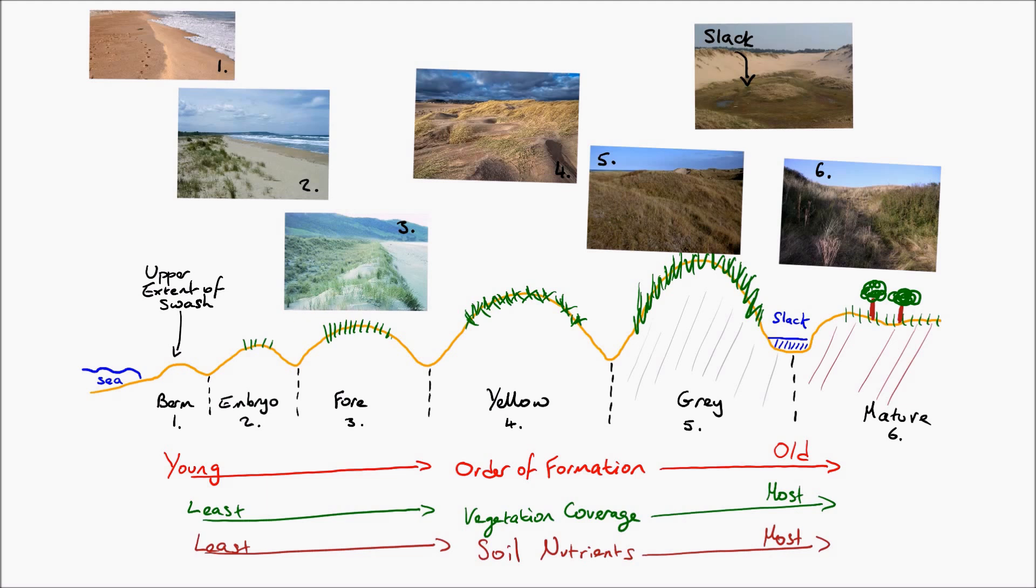So in photograph number one you can see that berm, that upper part of the swash. You can see too that it's beginning to get more and more vegetation and the vegetation gets denser and has larger varieties of plants the further inland you move.